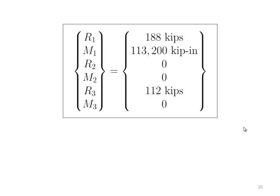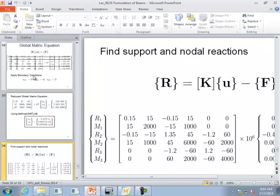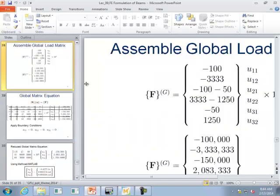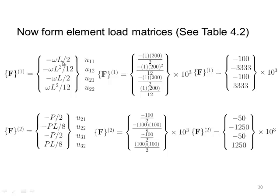In the load matrix, the first entry is vertical force and the second is moment, alternating through the nodes. This is consistent with the stiffness matrix development where position one is the loading force and position two is the moment.